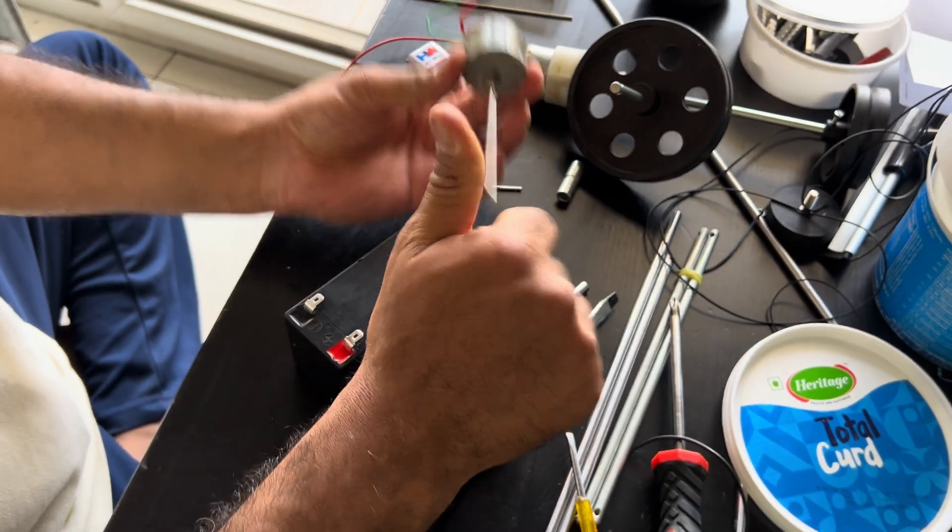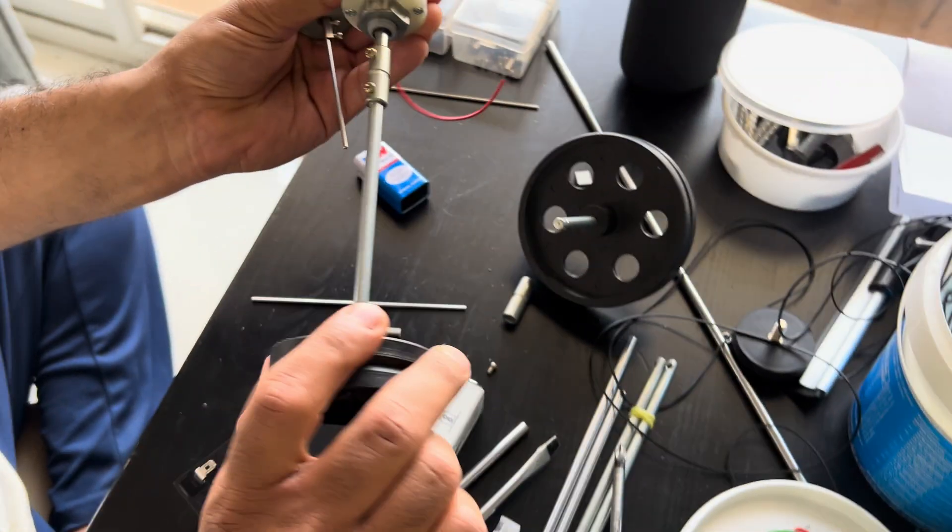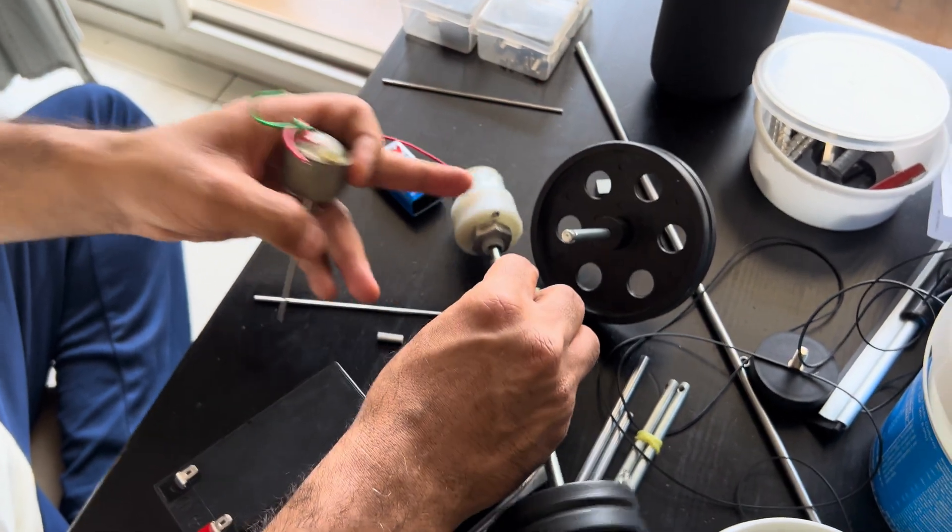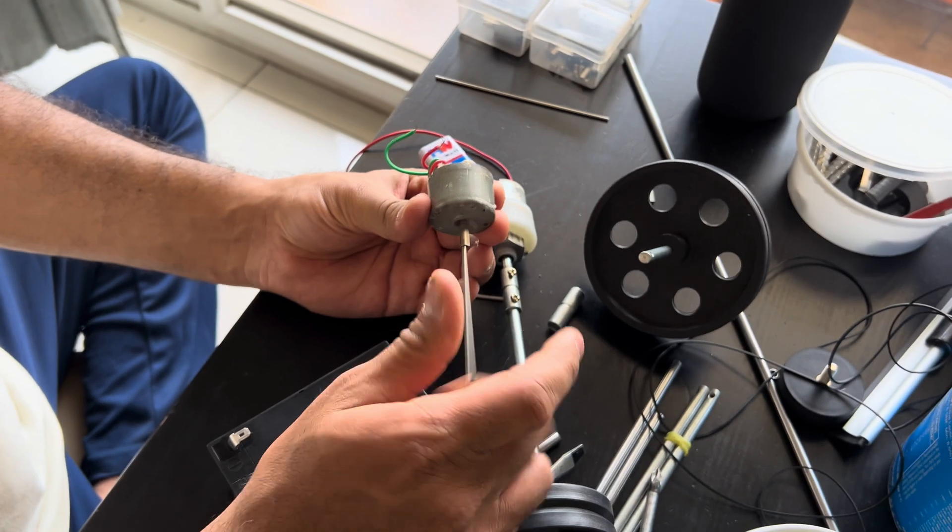This can be moved. This one cannot be rotated. See. It doesn't rotate. Because there is a gear inside. This is a gear box. But this does not have gear.